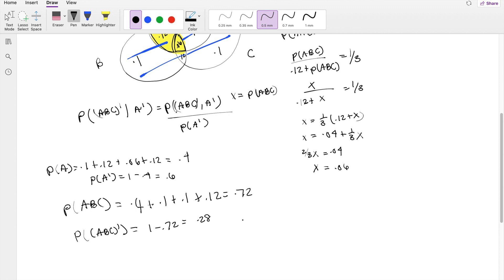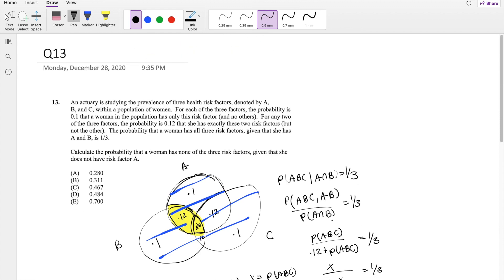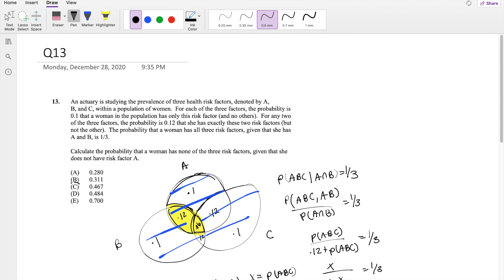So our final formula, plugging it back into our original equation, will be 0.28 divided by 0.6, which equals 0.4666 repeating, which is approximately equal to 0.467. Our answer is C.